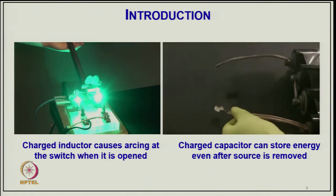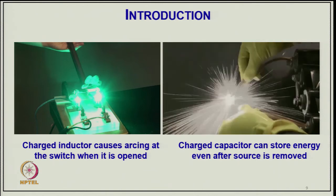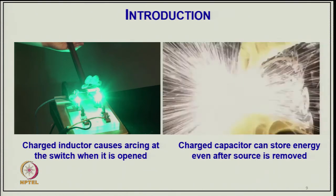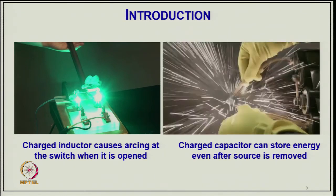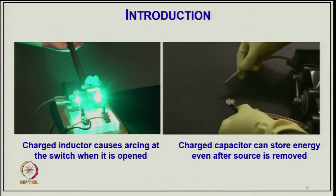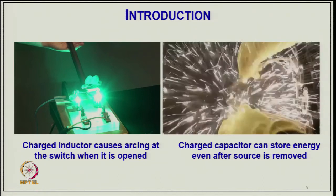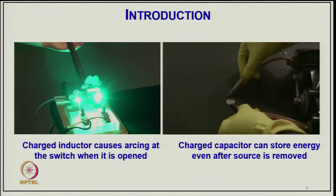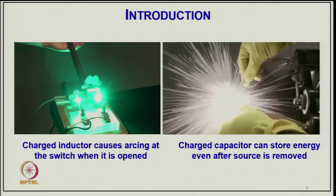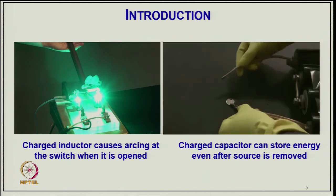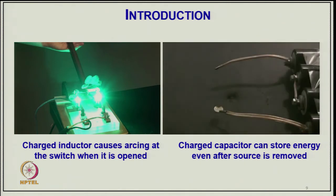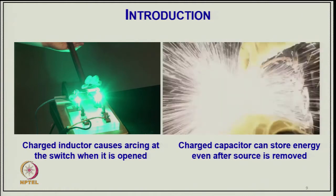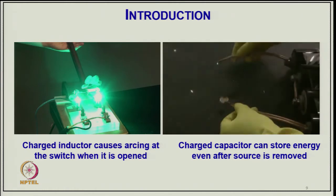A typical example: a charged inductor causes arcing in a switch when the circuit is opened. On the right side, a charged capacitor can store energy even after the source is removed, and when you short that capacitor you will see sparking as observed in the diagram. If you have a charged inductor and open its circuit, you will certainly find sparking, and similarly a charged capacitor can cause sparking when shorted.